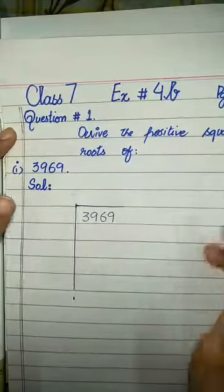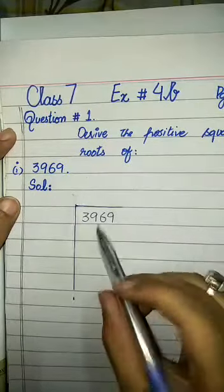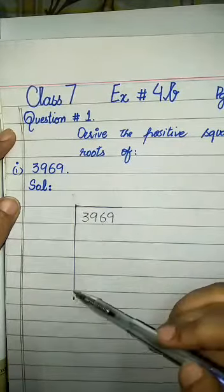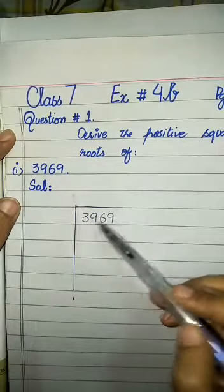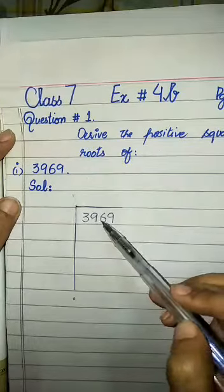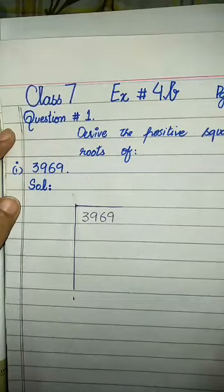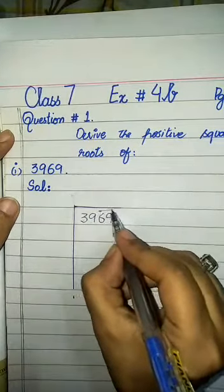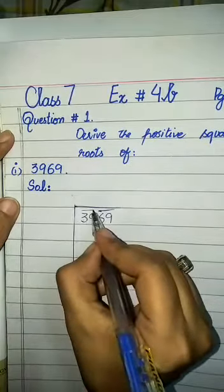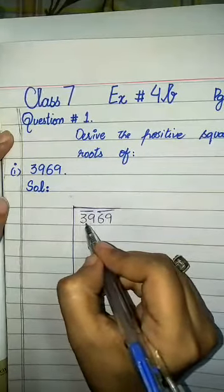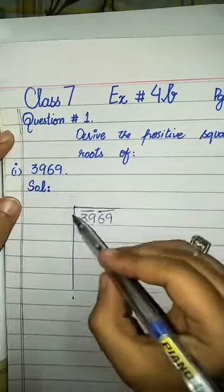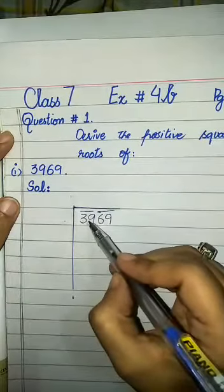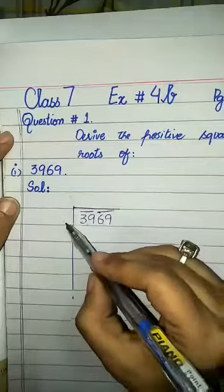This is the first step of the long division method. When you have the number, you write it under the division sign. The first step is: from the right side of the number, start making pairs. One pair is 69, the next pair is 39. Now we have two pairs. You have to write the number which is the closest perfect square — that is 36, so we write 6.